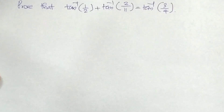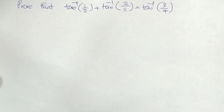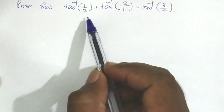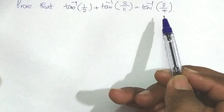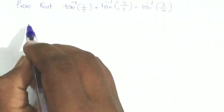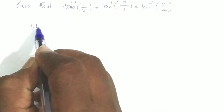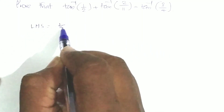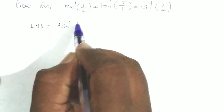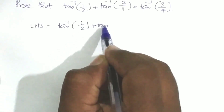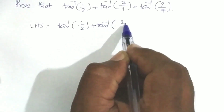We will study the formula in this section. For the 'prove that' question, we show LHS equals RHS. We will take LHS equal to tan inverse of 1/2 plus tan inverse of 2/11.